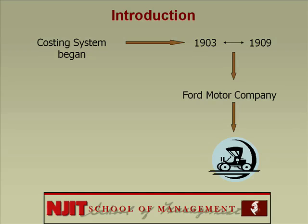Ford had a problem because at this point they had absolutely no competition, so there was no selling price that he knew of. So he called his accountants and told them: tell me how much it costs to make a small standard T-Model car. The reason is it would help determine a profit margin and set a selling price.